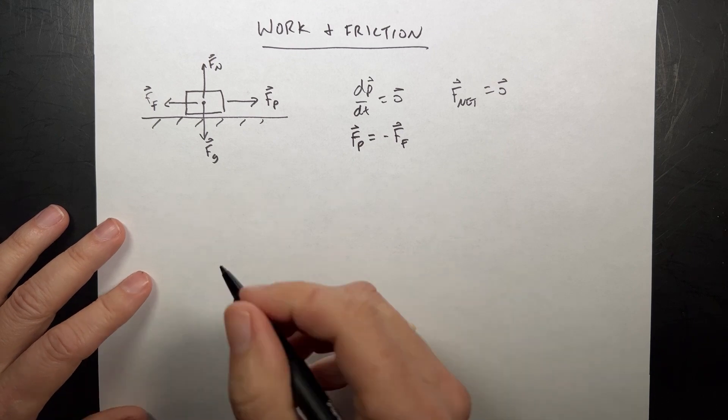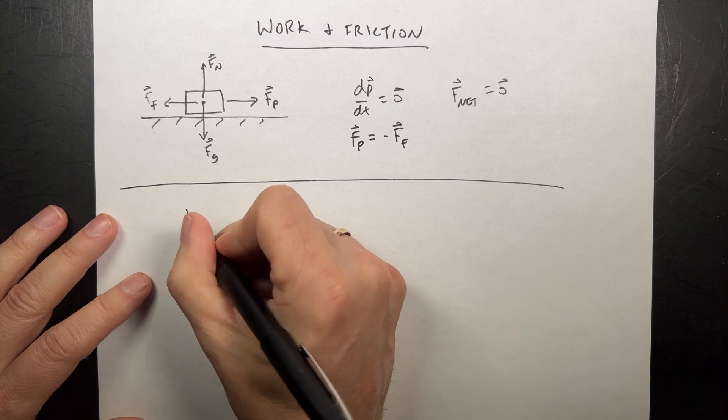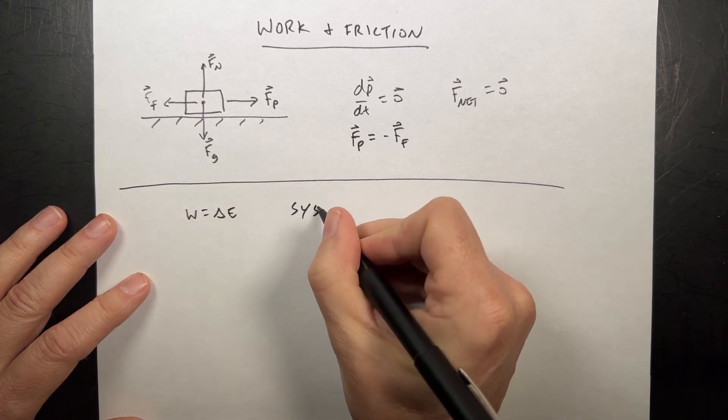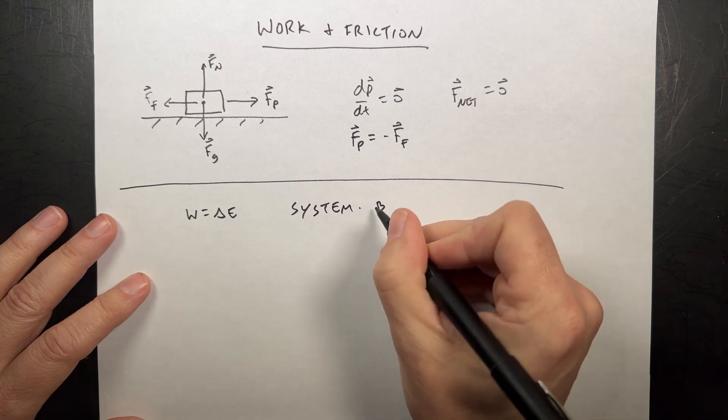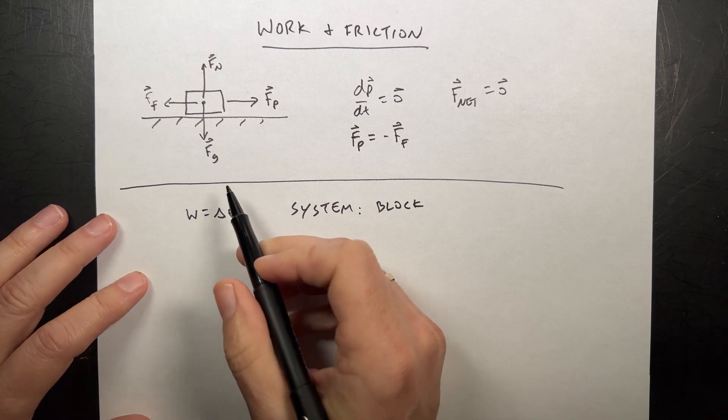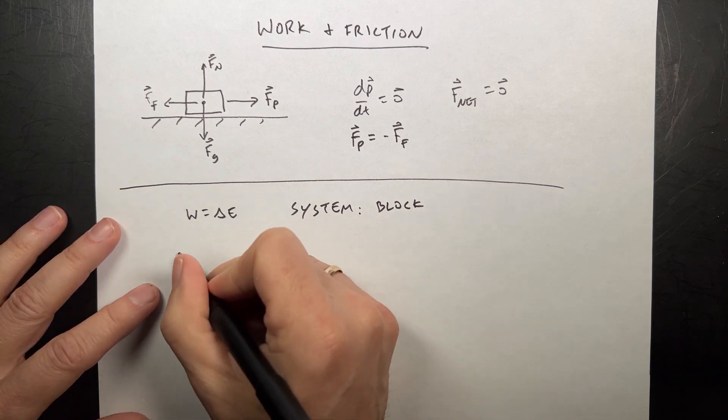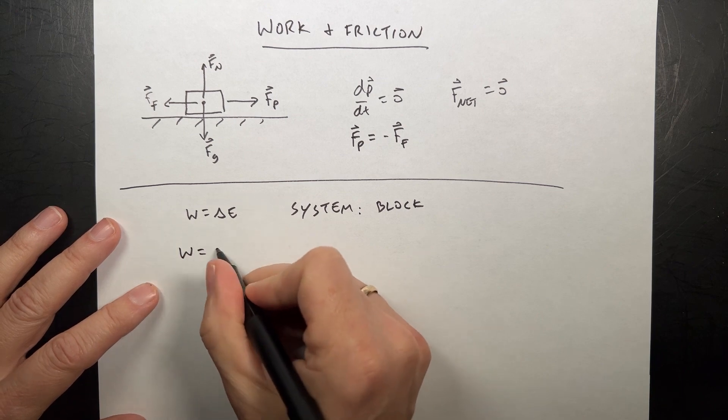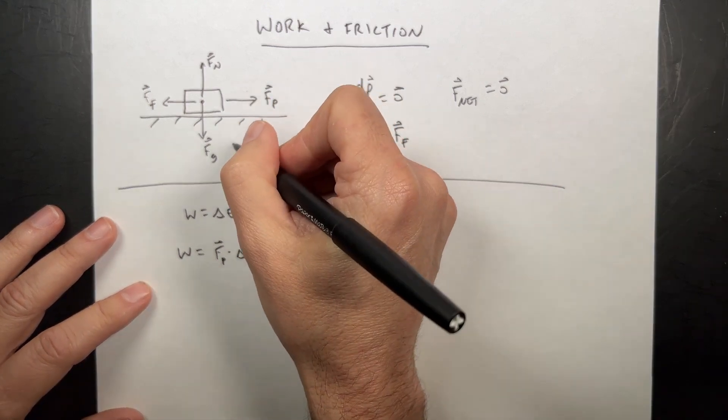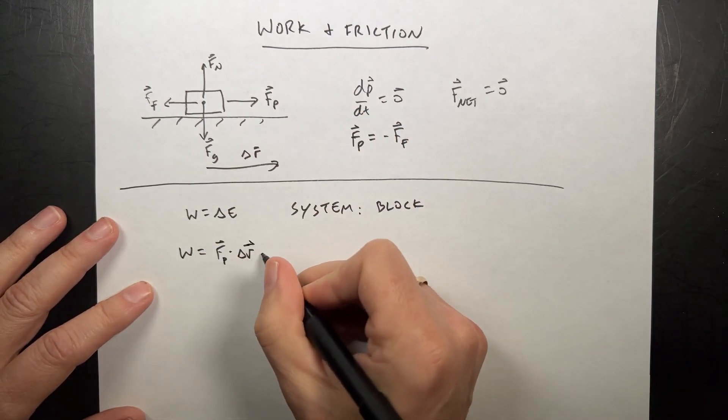Okay, now let's do the same problem using work energy. I have the same thing. I'm gonna say work is a change in energy and I'm gonna define my system as the block. So I have four forces acting on this. I really should calculate four works. So I'm gonna say work is gonna be Fp dot delta r, and this is some displacement here. Delta r, it moved.